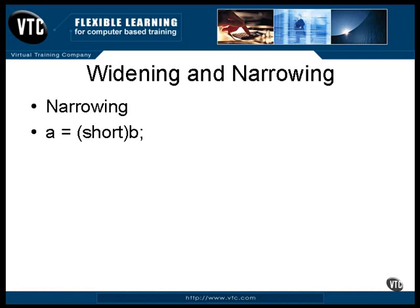You can always cast a value before you assign it, but it isn't always necessary. In this example, if B is a byte, there is no need to cast it before you assign it to a short variable, because the compiler can tell that it will always fit. You don't always need to cast to bring about a conversion. For example, if A is an int and B is a short, there's no need to cast because every possible value of B will fit into A. This is known as widening.